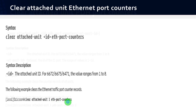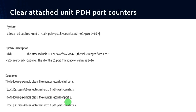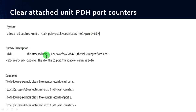If you want to clear the attached unit PDH port counters, you have to use the syntax: clear attached-unit <id> pdh-port-counters <e1 port id>. The id is the attached unit id, values ranging from 1 to 8. The e1 port id is optional — it is the id of the E1 port, with a value range of 1 to 16.